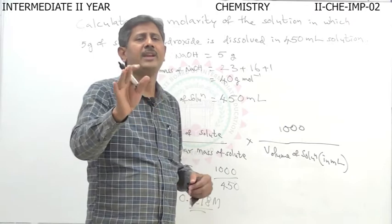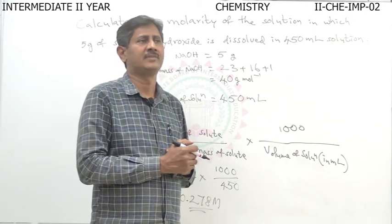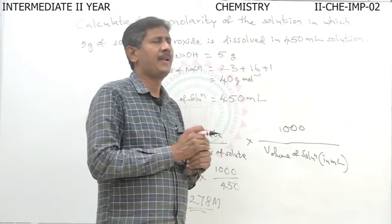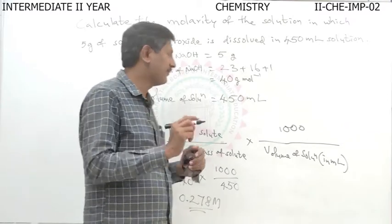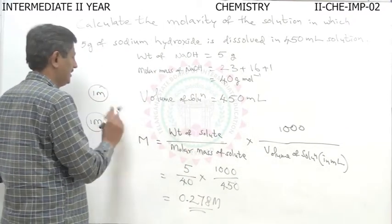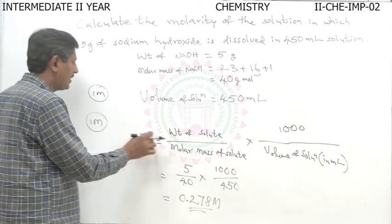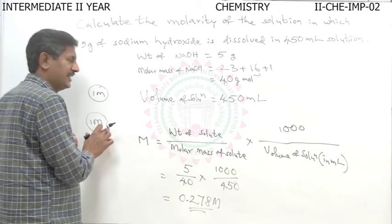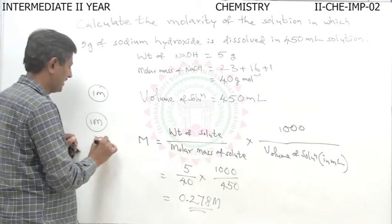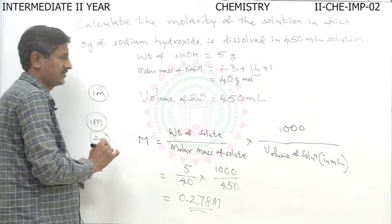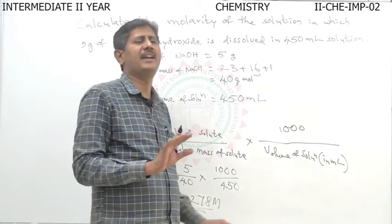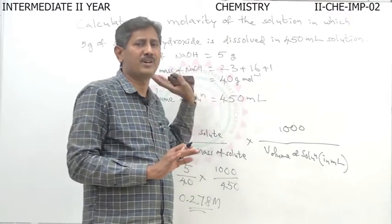The question is: define molarity, and one problem is given. If we have one mark for the definition, then one mark for the formula, then two marks for the problem — that gives four marks total. It is very simple and easily we can get four marks.